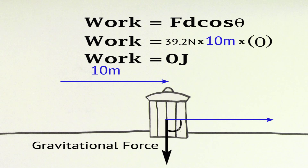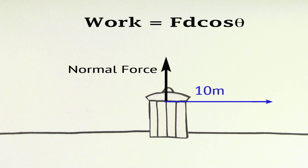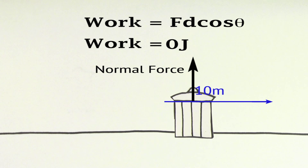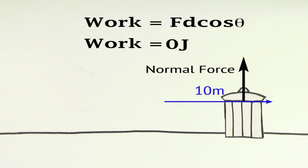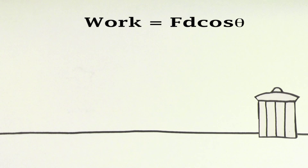Similarly, the work done by the normal force is also zero because the angle between the direction of the displacement and the normal force is 90 degrees. So the normal force does no work on the trash can. This makes sense because forces that are perpendicular to the motion can never do any work on that object. So that's how you can find the work done by individual forces.